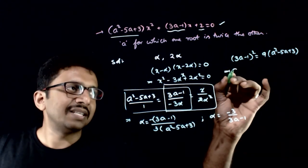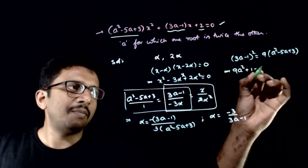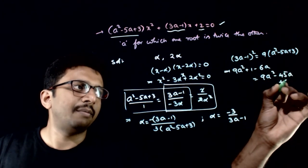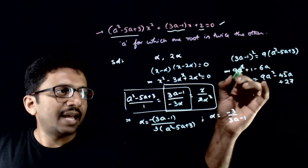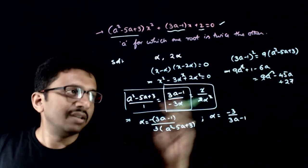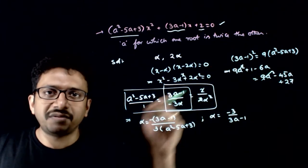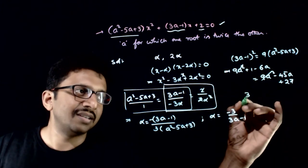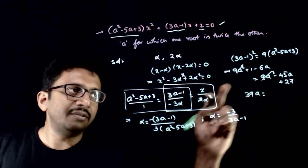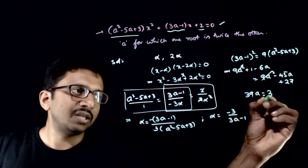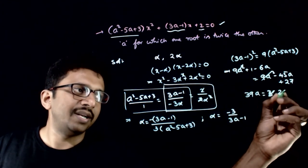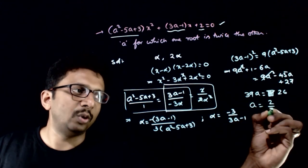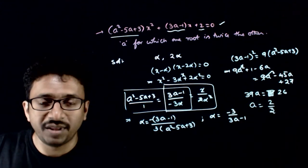This implies 9a² + 1 - 6a = 9a² - 45a + 27. The 9a² terms cancel. So -45a moves to the other side becoming 45a, giving 45a - 6a = 39a = 27 - 1 = 26. This implies a = 26/39 = 2/3. That should be the answer.